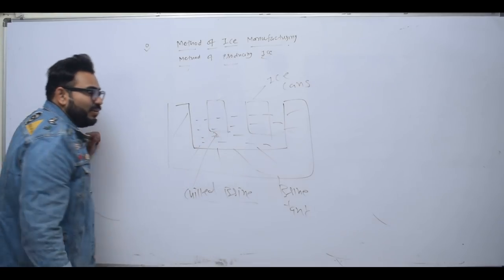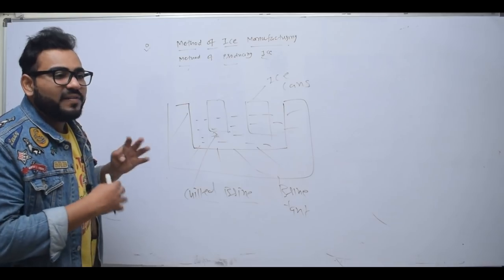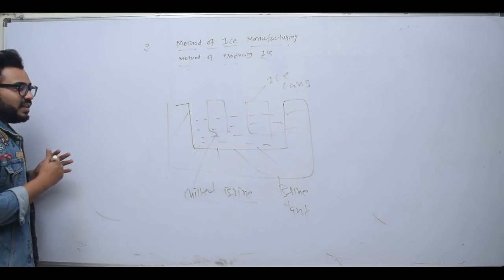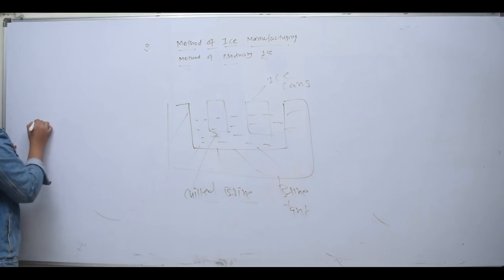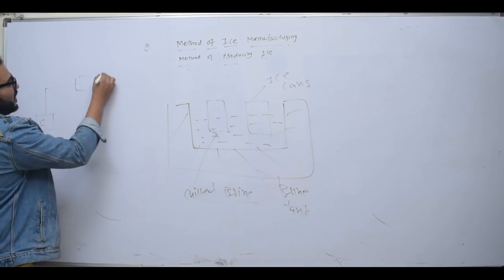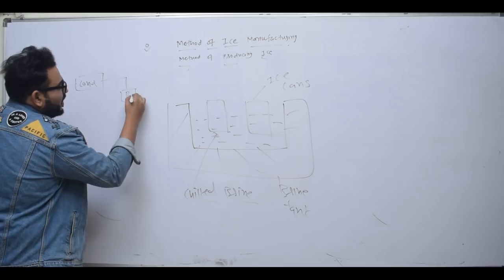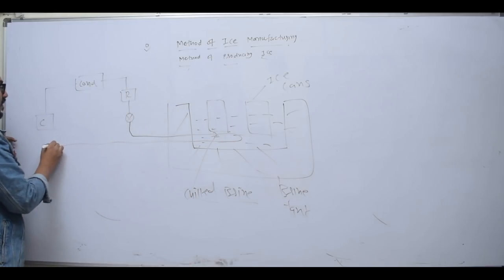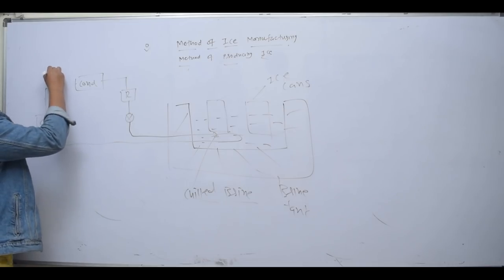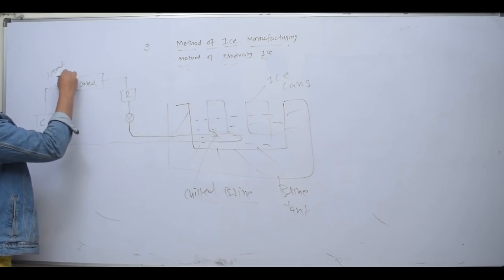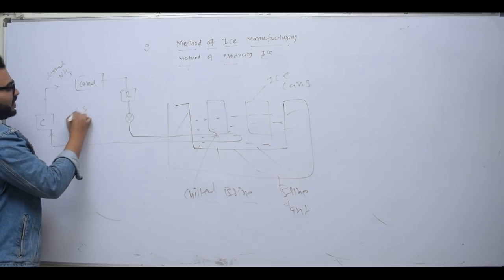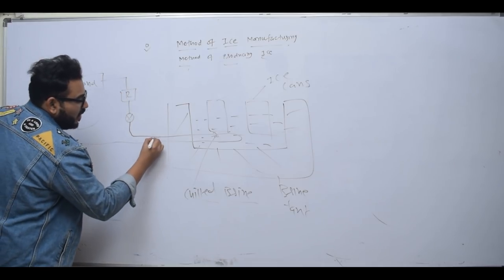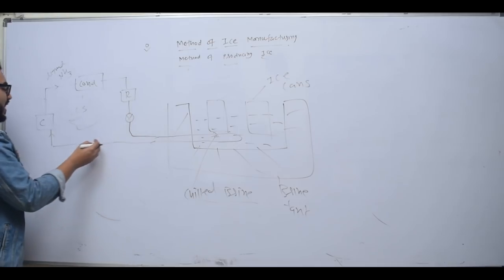So the brine needs cooling. For the brine to absorb heat and make ice, we use a vapor compression system. The system has a compressor, condenser, receiver, and expansion valve. Ammonia is used as the refrigerant. The vapor compression system with ammonia refrigerant will come to the brine tank and absorb heat from the brine.